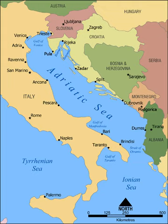There are 19 Adriatic sea ports that each handle more than a million tons of cargo per year. The largest cargo ports among them are the Port of Trieste, the Port of Venice, the Port of Ravenna, the Port of Koper, the Port of Rijeka, and the Port of Brindisi. The largest passenger ports in the Adriatic are the Port of Split and ports in Ancona. The largest seaport in Montenegro is the Port of Bar. In 2010, the northern Adriatic sea ports of Trieste, Venice, Ravenna, Koper and Rijeka founded the North Adriatic Ports Association to position themselves more favourably in the EU's transport systems.